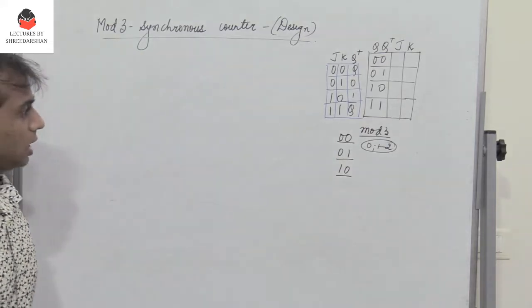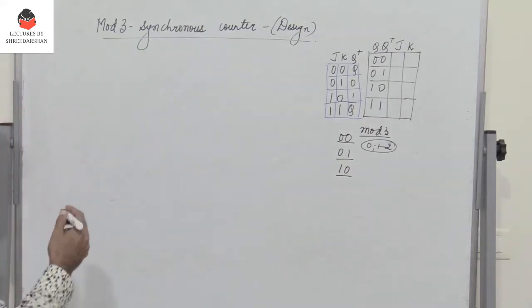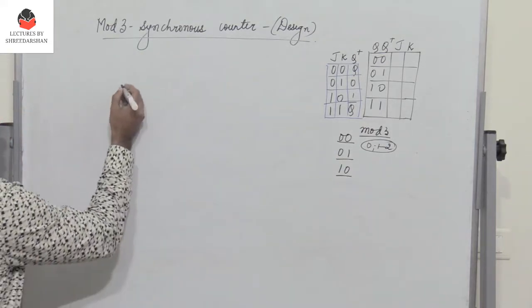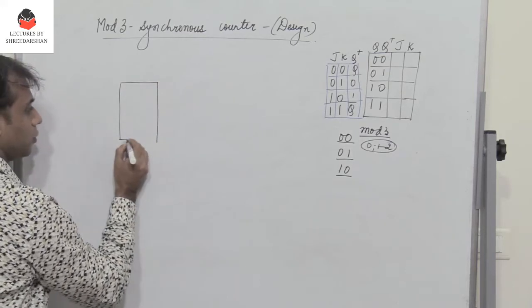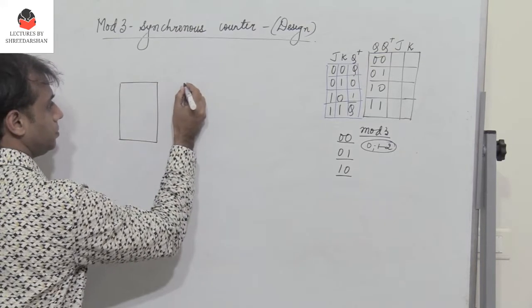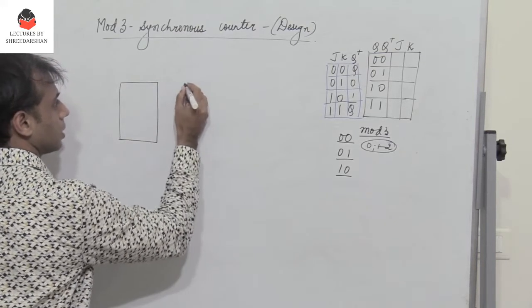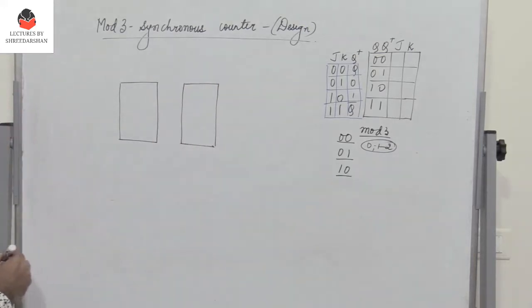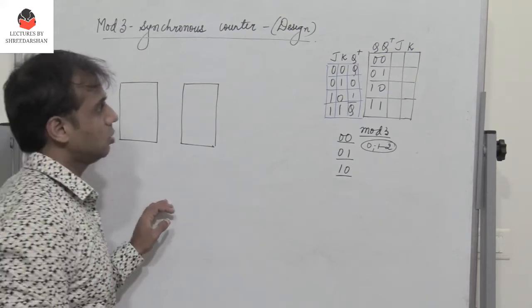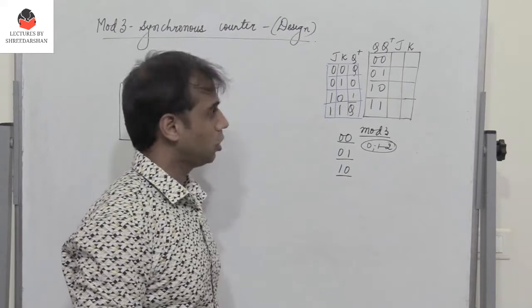Since there are three states represented by a two-bit binary number, I need two flip-flops — I need two JK flip-flops. So before we design a synchronous mod 3 counter using JK flip-flops, let us revisit the JK flip-flop.